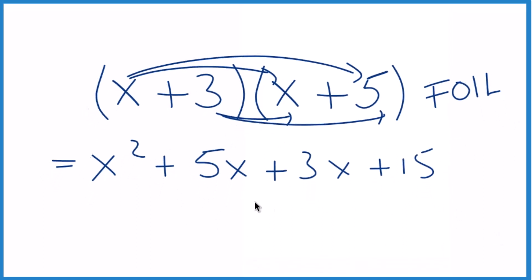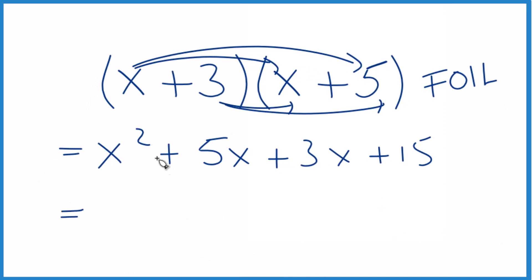So now that we've expanded this, we can simplify. We have x squared, 5x plus 3x, that's 8x. And then we have plus 15 here. So when we expand and simplify x plus 3 times x plus 5, we get x squared plus 8x plus 15.